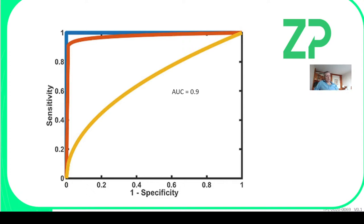Triaging means a hundred people come into a healthcare system and you want to decide efficiently how to take care of them. You test everyone — if they're positive they go in one direction, if they're negative in another — but there's a rate at which you're going to call it wrong, getting false positives and false negatives. Sometimes that's not terrible; it just means you're going to reassess that person. You have to accept some error in life, and the question is how much error you're willing to accept while still having a useful diagnostic.